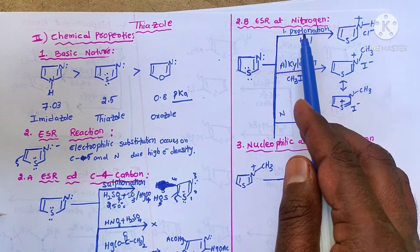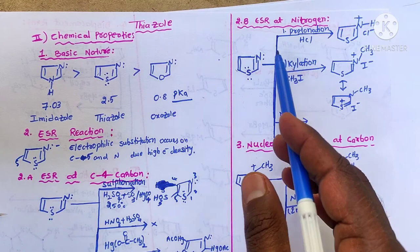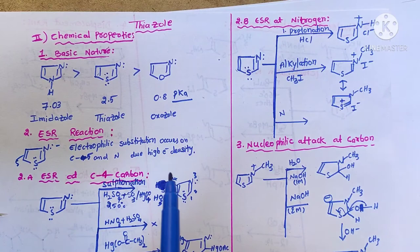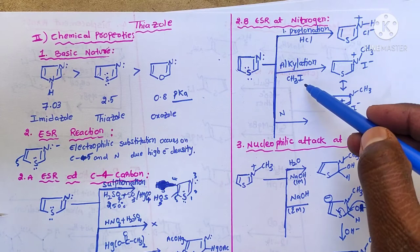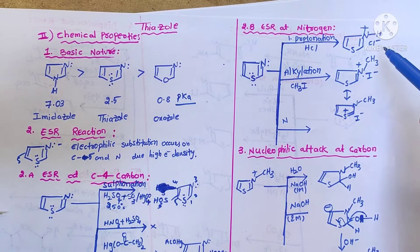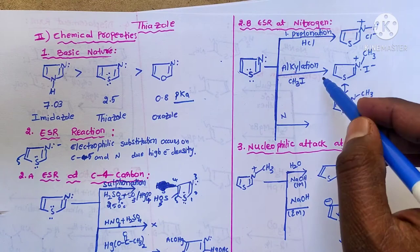Now we go for reactions where the electrophile is substituted on the nitrogen. First is protonation — we can consider this as basic nature also, because H+ acts as an acid as well as an electrophile — and we get the thiazolium salt. For alkylation, when thiazole is treated with methyl iodide, the methyl group is substituted on the nitrogen to give methyl thiazolium iodide — this is known as a quaternization reaction.